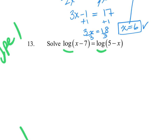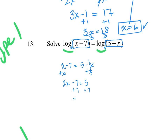Moving to Type 1 question 13: even though no base is written, both sides are base 10, so their arguments must be equal. Setting x minus 7 equal to 5 minus x, we put all x's on one side: 2x minus 7 equals 5. Adding 7 to both sides gives 2x equals 12, so x equals 6.